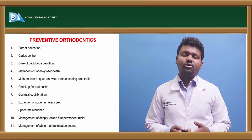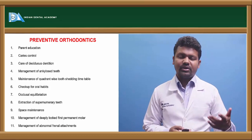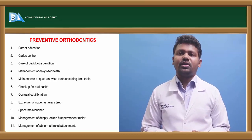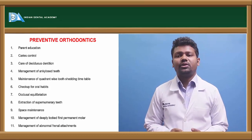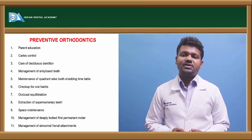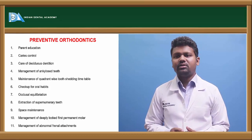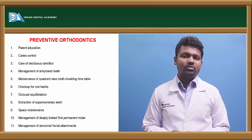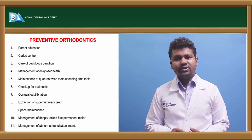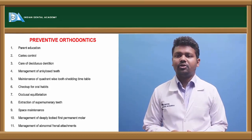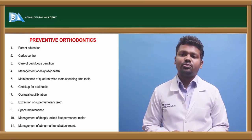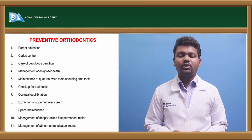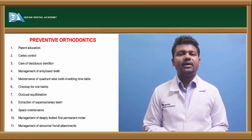Preventive orthodontics — this can come as your short note. Preventive procedures include parent education, caries control, care of deciduous dentition, management of unerupted teeth, maintenance of a coordinated tooth-shedding timetable, checkup for oral habits, occlusal equilibration, extraction of supernumerary teeth, space maintenance, management of deeply locked permanent molars, and management of abnormal frenal attachment.